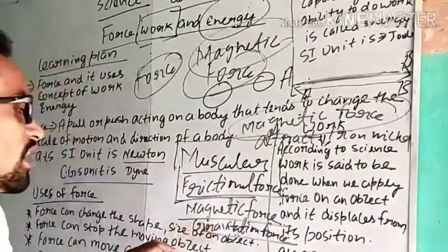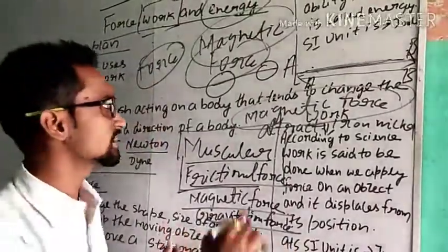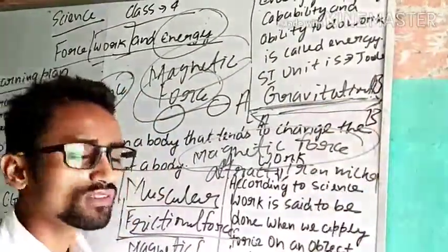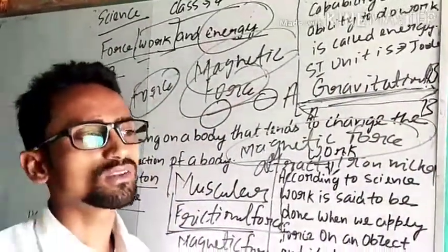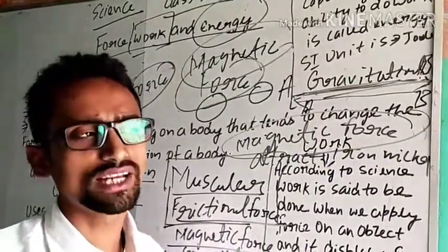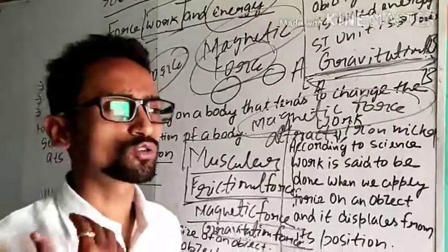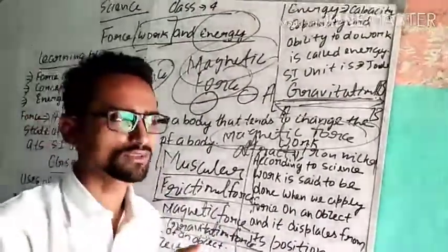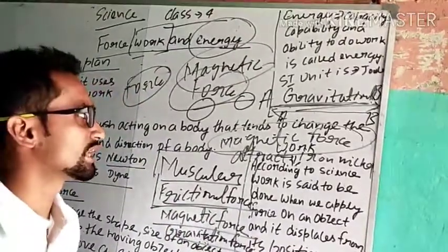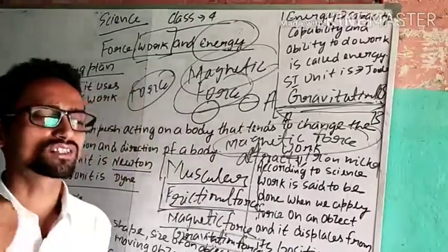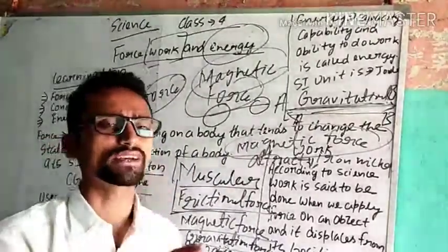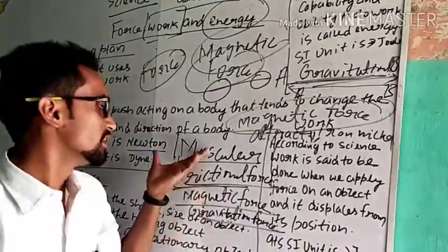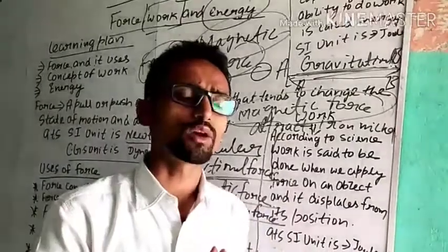Now talking about another type of force — gravitational force. Gravitational force means the force generated by a heavenly or celestial body to attract anything towards its center. The force generated by the earth to attract anything towards its center is known as the gravity of the earth. So we have studied the different types of force.